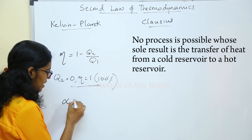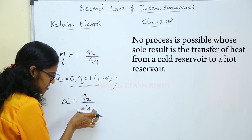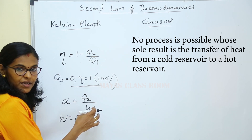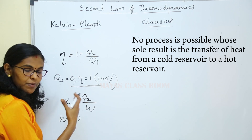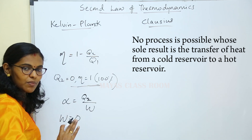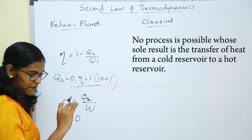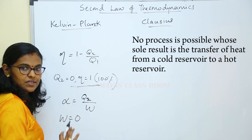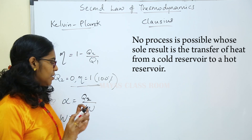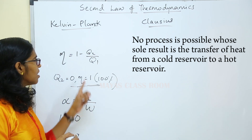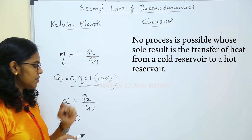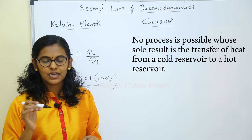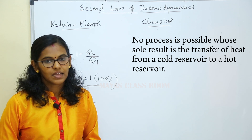In the refrigerator case, we have a coefficient of performance. The coefficient of performance would be infinity if heat could transfer from a cold body to a hot body without external work. This process is not possible. No process is possible whose sole result is the transfer of heat from a cold reservoir to a hot reservoir. That is the Clausius statement.